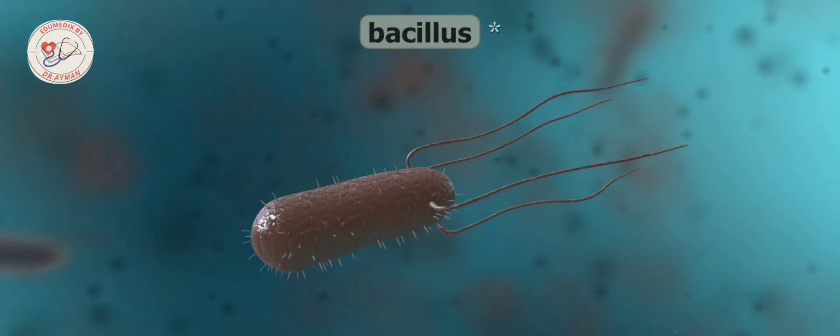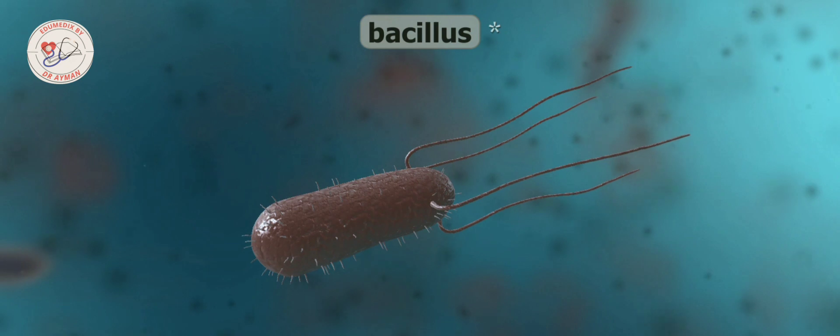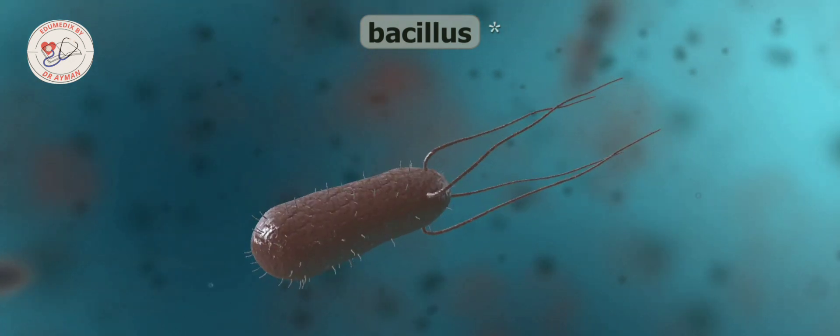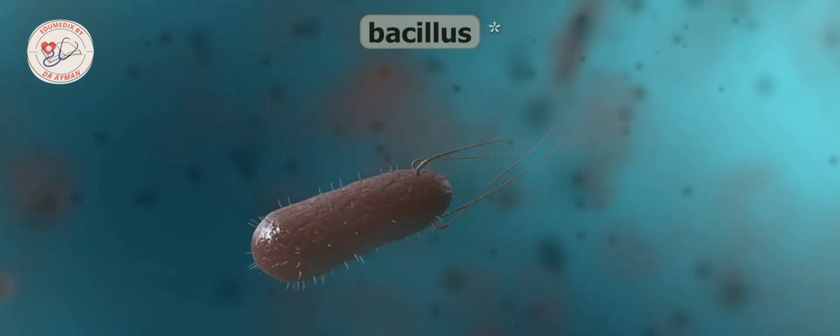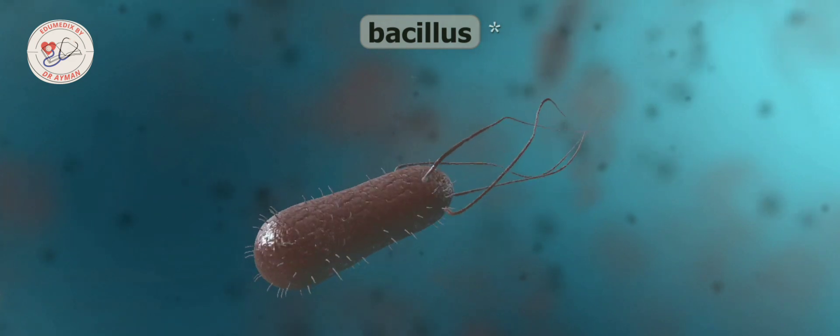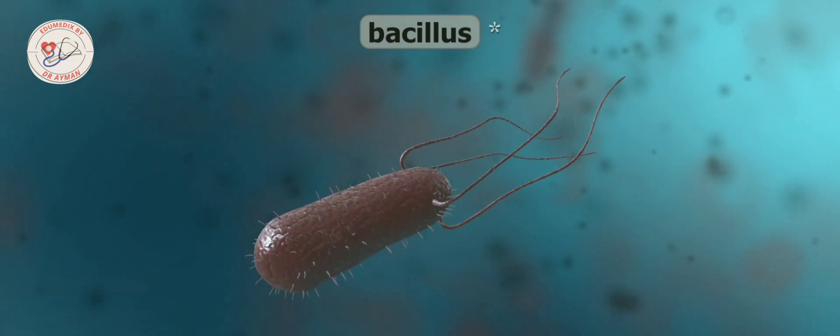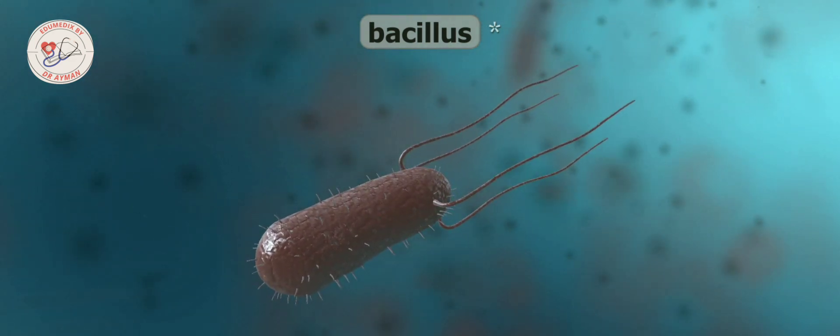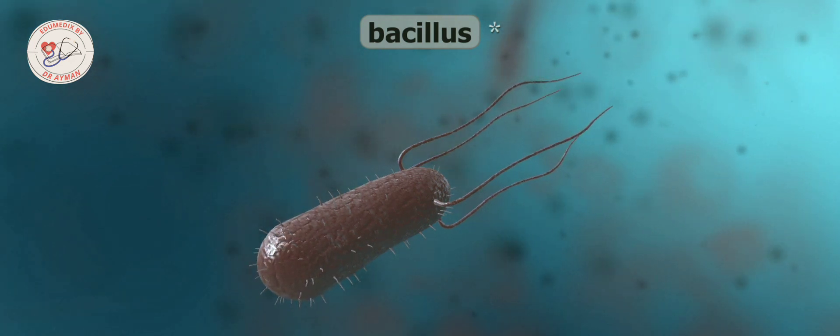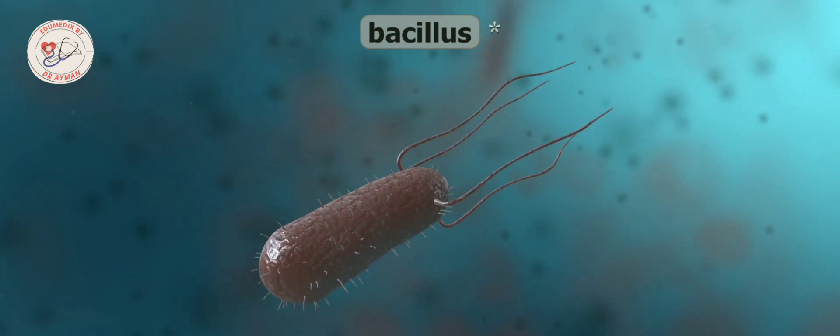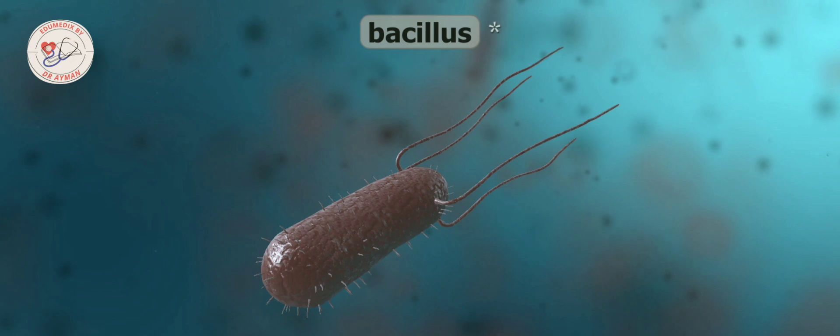One group of rod-shaped bacteria are called bacilli. These can be harmless, such as the lactobacilli used in the food industry. Many bacilli cause diseases like the pathogens of plague, tuberculosis, salmonellosis, and tetanus.